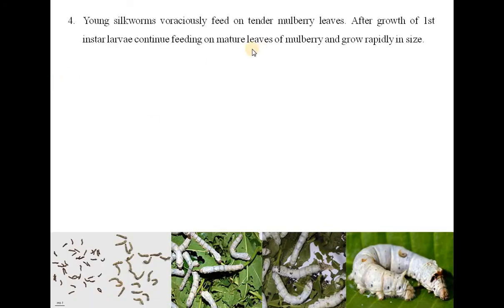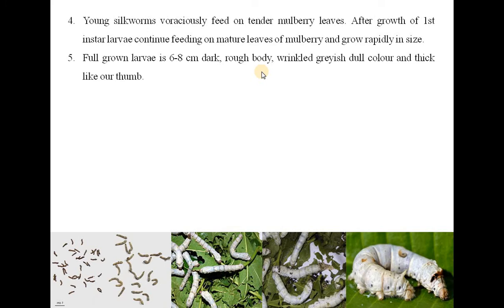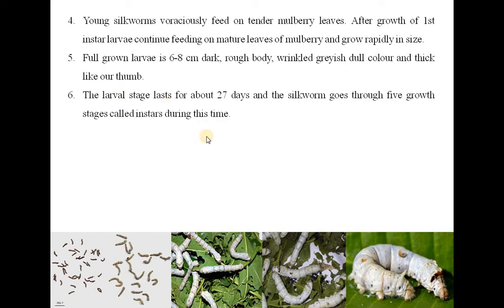Young silkworms voraciously feed on tender mulberry leaves. After growth of the first instar larva, it continues feeding on mature leaves of mulberry and grows rapidly in size. The full-grown larva is 6 to 8 cm, with a dark rough wrinkled grayish dull colour and thick like a thumb. The larval stage lasts for about 27 days and the silkworm goes through 5 growth stages called instars during this time.